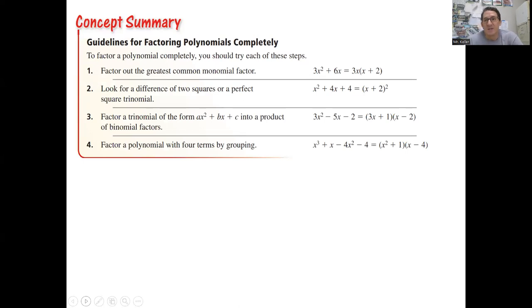So guidelines for factoring completely: factor out the greatest monomial factor, GCF. Do GCF first, always check for GCF first. Once that's out, then you want to look for the other methods we learned. Is it a difference of squares, or is it a factor by grouping? Those are the ones that we've gone over, and that's what we're going to be looking at.